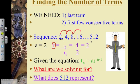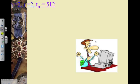Using this information, we need to solve for n. However, we're given one more piece of information, 512, and that is supposed to represent the value of the last term.